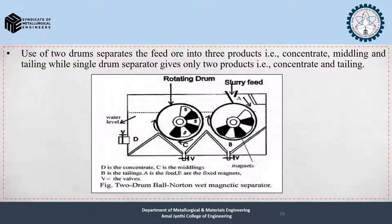Use of 2 drums separates the feed ore into 3 products: concentrate, middling, and tailing. A single-drum separator gives only 2 products: concentrate and tailing. By this, we can understand that the 2-drum Ball-Norton magnetic separator is much more efficient than the single-drum Ball-Norton separator.